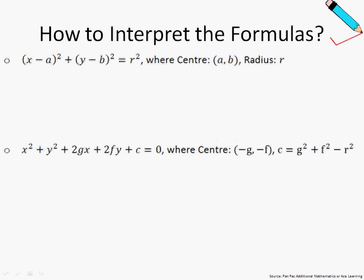So how do we interpret the two formulas that you saw just now on the previous slide? In the first formula, let me just give an example. If I have x minus 2 square plus y minus 3 square equals to 5 square, then from the given formula, I will identify my a to be 2, my b to be 3, and my r to be 5. So therefore the center, based on the formula you see over here, the center will just be 2 comma 3 and the radius will just be 5.